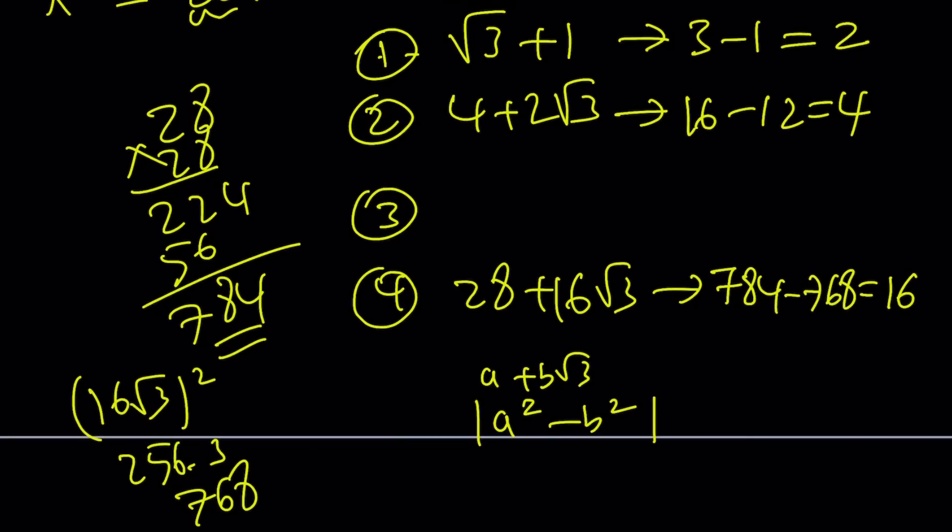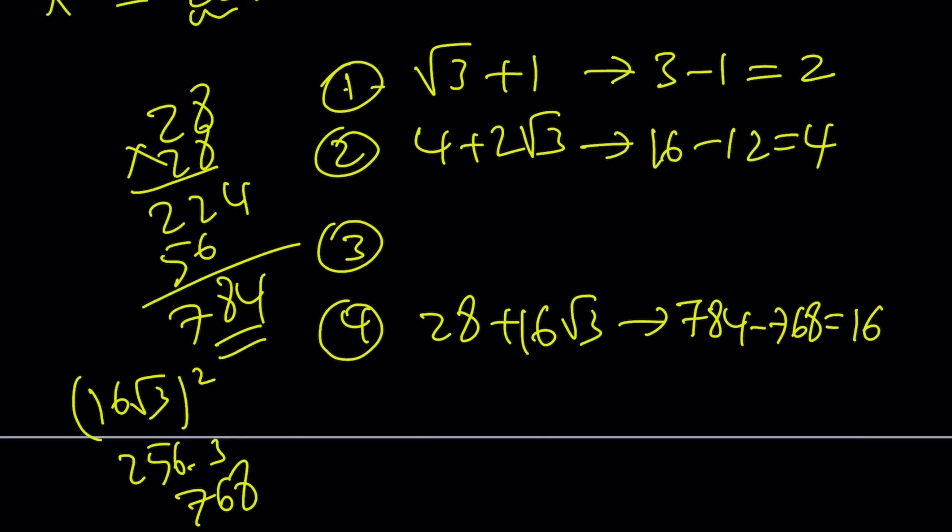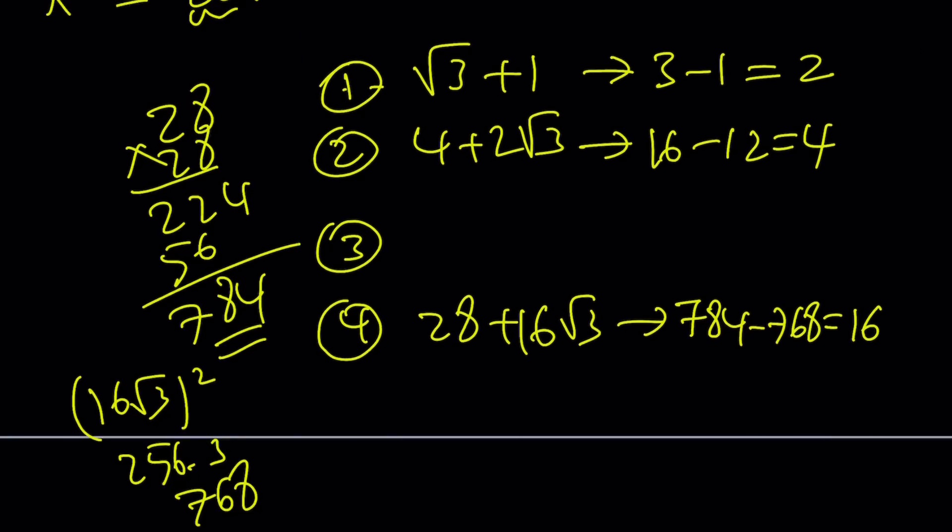Now take a look at these numbers real quick. 2, 4, and 16. This is 2 to the first power, this is 2 to the second power, and this is 2 to the fourth power. So what am I missing? I am missing 2 to the third power. So I want to get 8 here. Make sense?